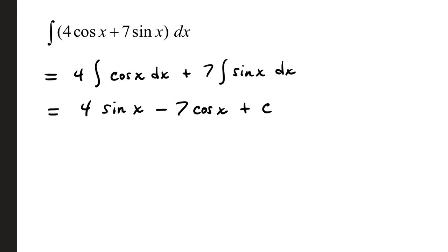So the antiderivative of cosine x is sine x, so that's four sine x. The second term, the antiderivative of sine x is negative cosine x. That's a tricky one. You've got to watch your sign. But anyway, long story short, it gives you negative seven cosine x plus c.